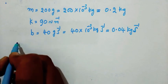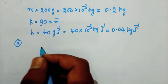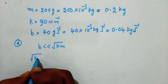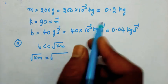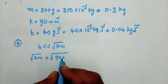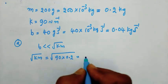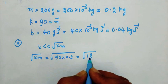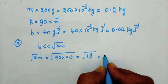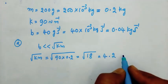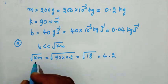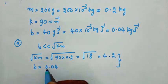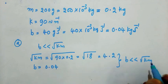In part one, we calculate the time period. First, checking small damping: B is very much less than square root of Km. Square root of Km equals square root of 90 into 0.2, which is square root of 18, nearly equal to 4 (close to square root of 16). B value is 0.04, which is very much less than square root of Km. For small damping, the time period of a damped harmonic oscillator equals the time period of oscillation due to the spring.